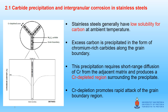These carbides, which can contain up to 95 percent chromium, have much higher chromium content than the surrounding matrix. This leads to the immediate surroundings of the precipitated carbides being depleted of chromium, as seen in the figure shown. If the chromium content of these depleted zones adjacent to the grain boundaries falls below approximately 12 percent, the corrosion resistance of these areas is significantly reduced, resulting in intergranular attack progressing along the chromium-depleted grain boundaries.